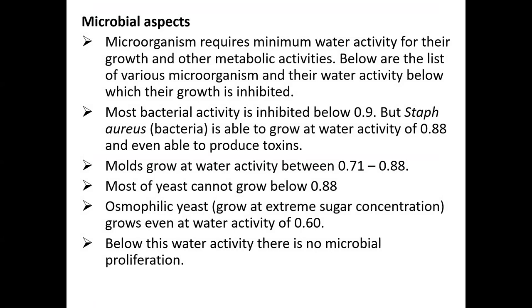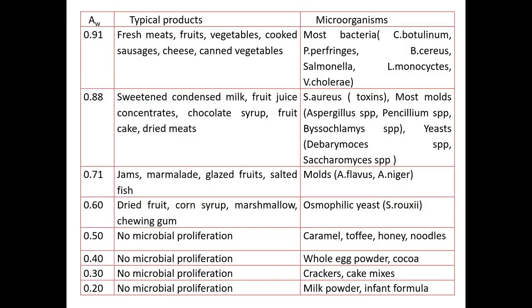Regarding the microbial aspect: microorganisms require a minimum water activity for their growth and metabolic activities. Different microorganisms have different water activity requirements. At water activity near 0.9, foods like fresh meat, fruit, vegetables, cooked sausages, and cheese can support growth of Clostridium botulinum, Bacillus cereus, Salmonella, Listeria monocytogenes, and Vibrio cholerae — all dangerous microorganisms.